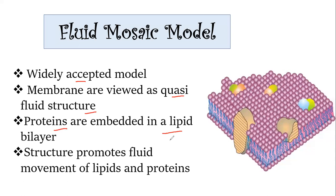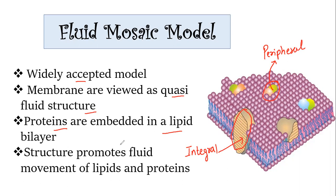Proteins are embedded in the lipid bilayer. Those embedded in the lipid bilayer are integral proteins, and those attached superficially to the upper side are known as peripheral proteins. This kind of structure promotes fluid movement of lipid and proteins. Whenever these structures are connected and the biomolecules are in association, they promote the movement of each other, but only to a limited extent.